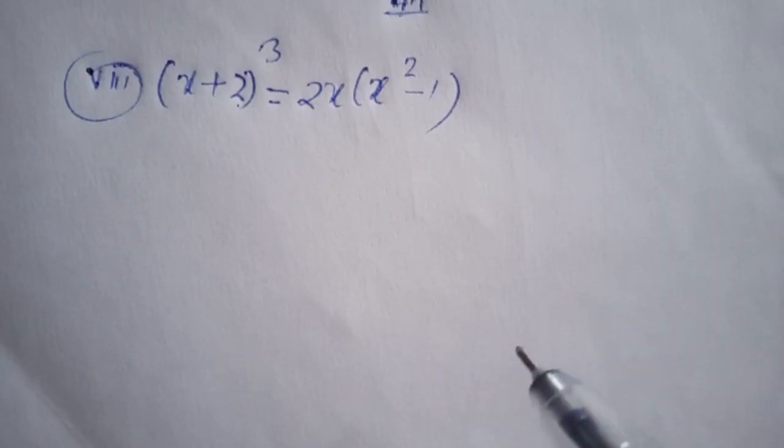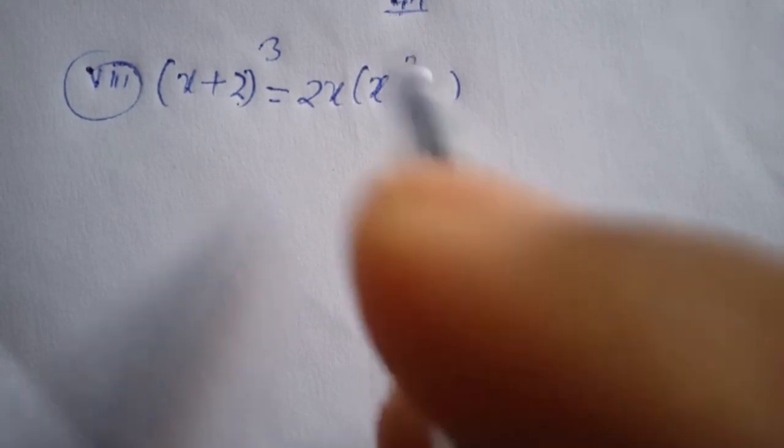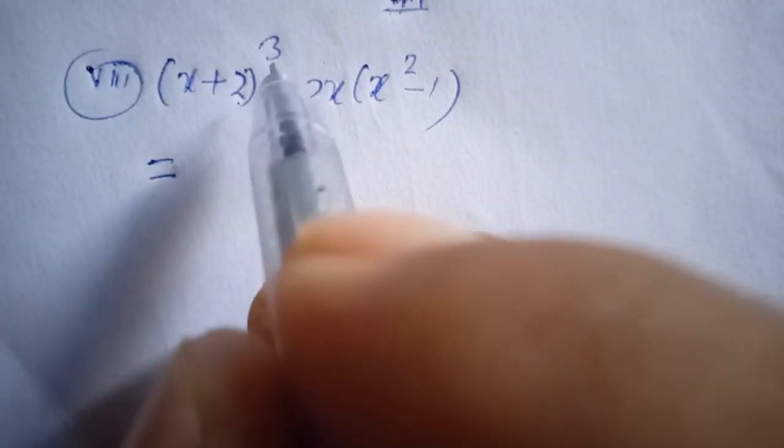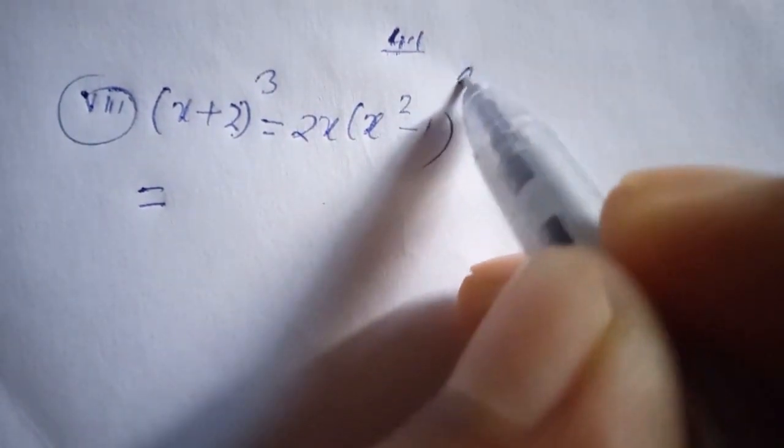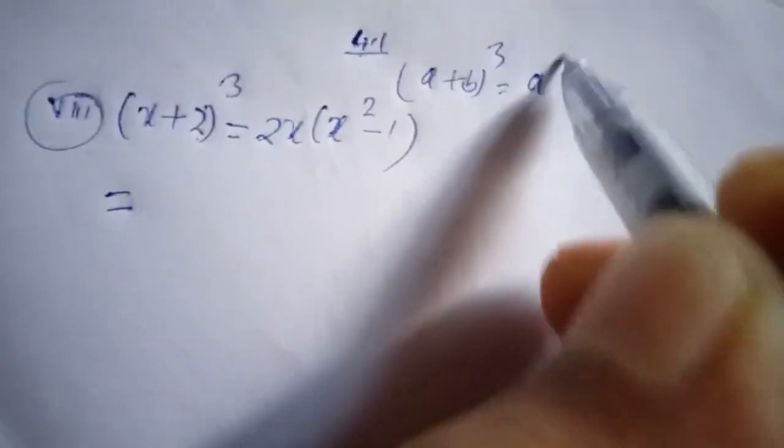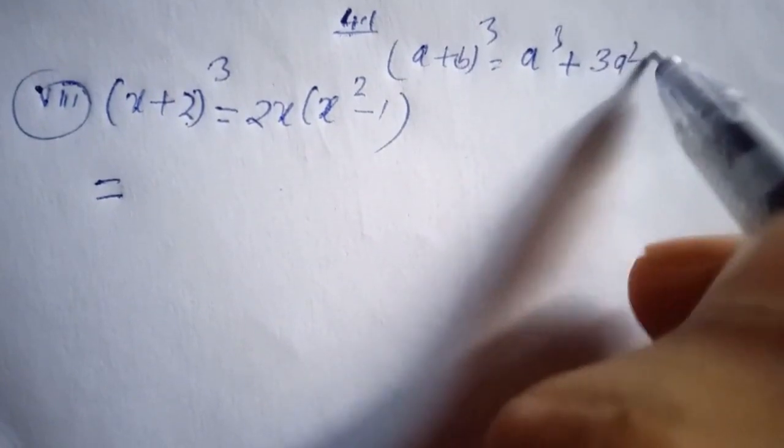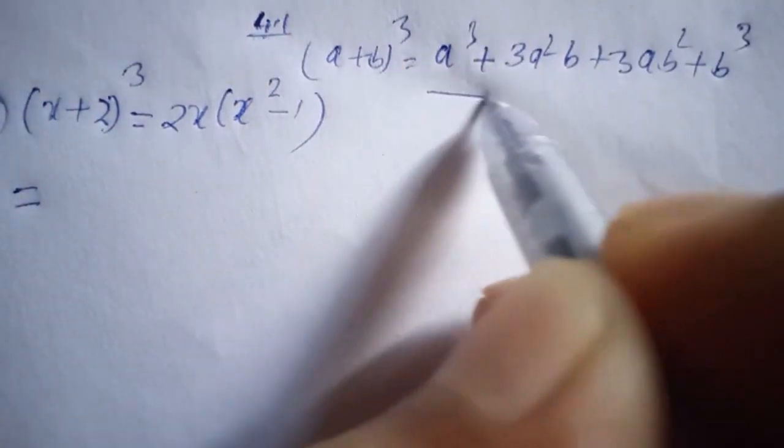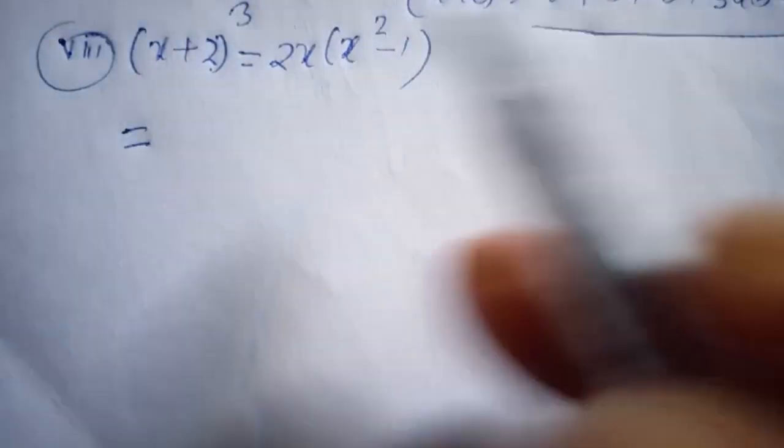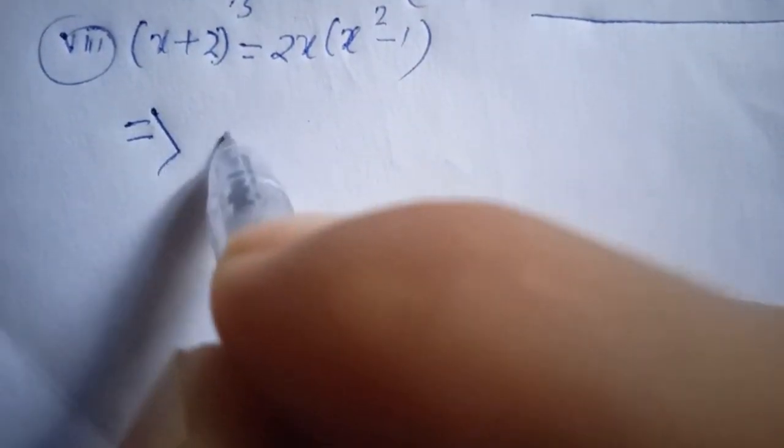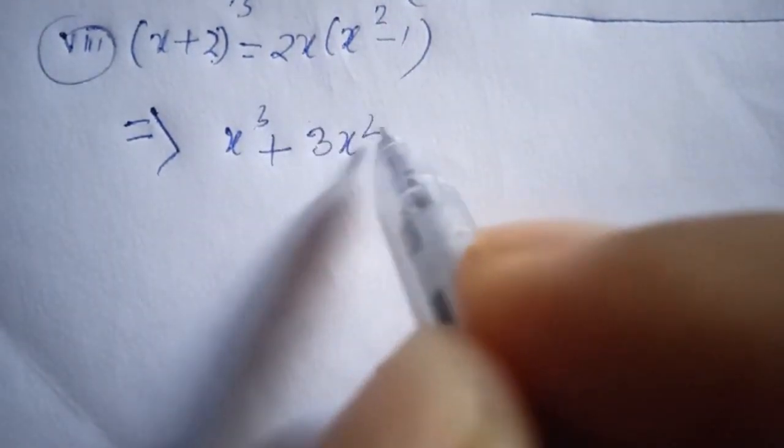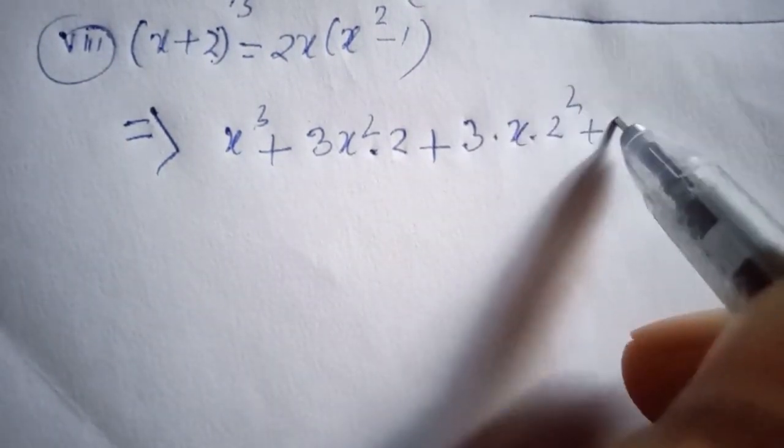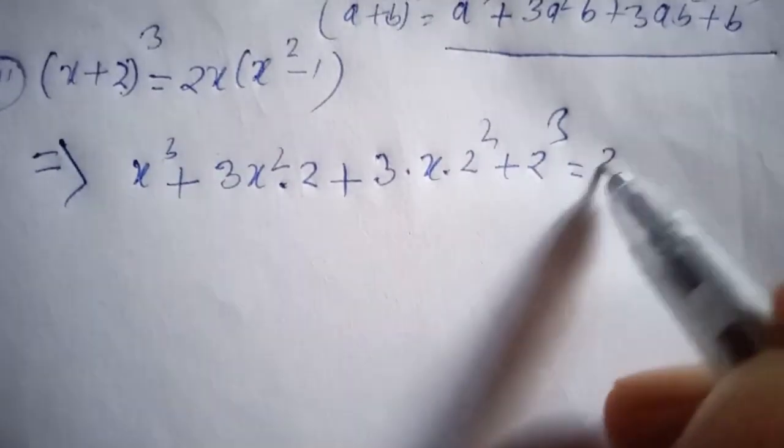Next problem: (x + 2) cubed. Using the formula (a + b) cubed equals a cubed plus 3a squared b plus 3ab squared plus b cubed. Expanding, we get x cubed plus 3 times x squared times 2 plus 3 times x times 2 squared plus 2 cubed.